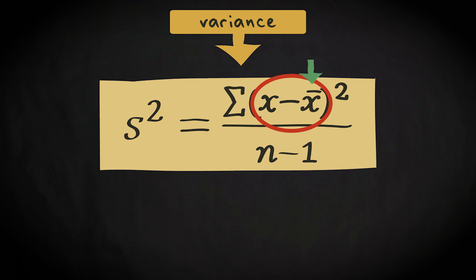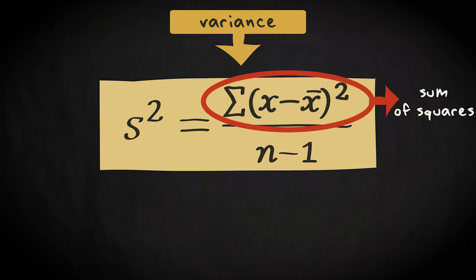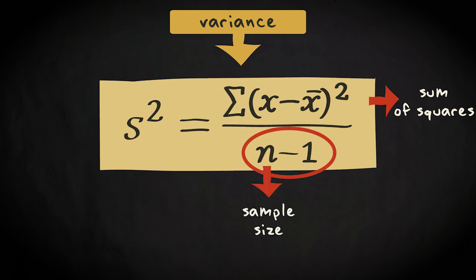Next, you have to square all these values and add them up. The result is what we call the sum of squares. In the following step, you divide the sum of squares by the size of your sample, n, minus 1.